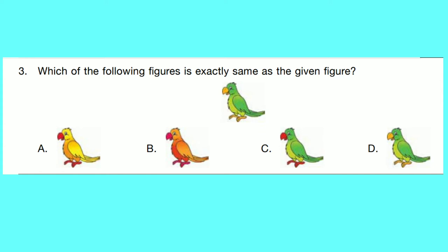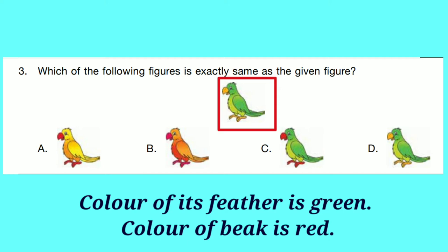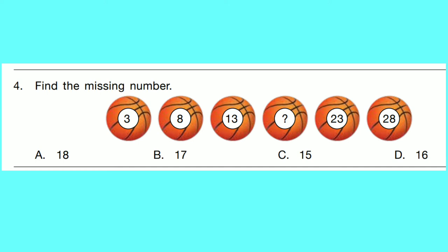Question number 3: Which of the following figures is exactly same as the given figure? This is a parrot. Looking towards the color of its feather and beak. Correct option is D.